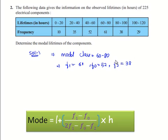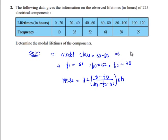As we know that mode is equal to L plus F1 minus F0 by 2F1 minus F0 minus F2 whole bracket into H. Here H is the class width, that is the difference between the limits, which is 20, and L is the lower limit of the modal class, which is 60.